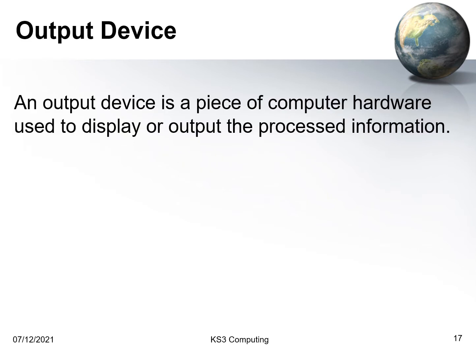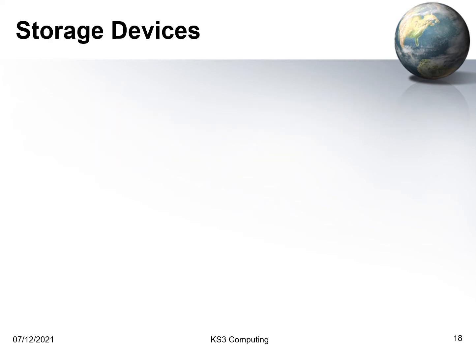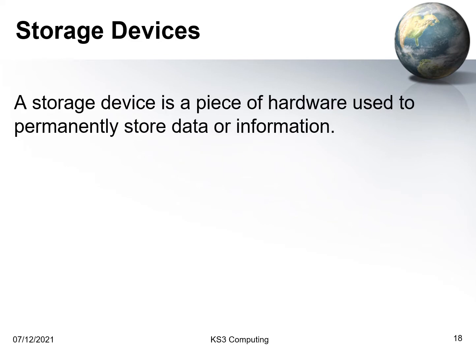An output device is the way that the computer shows the world what it's done — it displays or outputs the processed information. Output devices include things like a screen; we often call these video display units, or VDUs. Another example of an output device is a speaker, including those tiny ones you put in your ears called headphones.